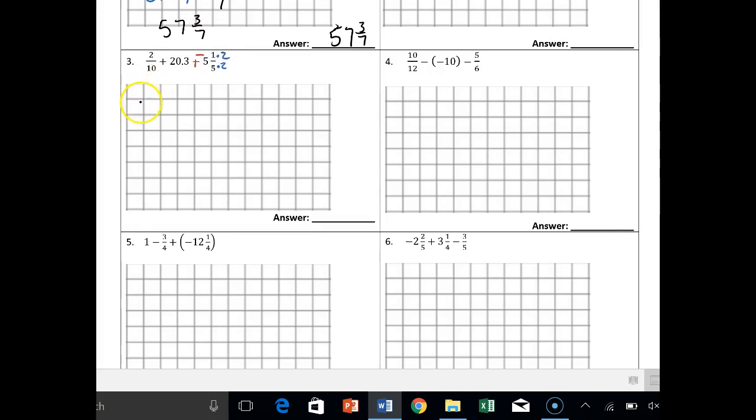So now I have 2 tenths plus 20.3 plus negative 5 and 2 tenths. Now let's use the commutative property of addition and say okay negative 5 and 2 tenths plus 2 tenths plus 20.3. Notice I got the 2 tenths next to each other.